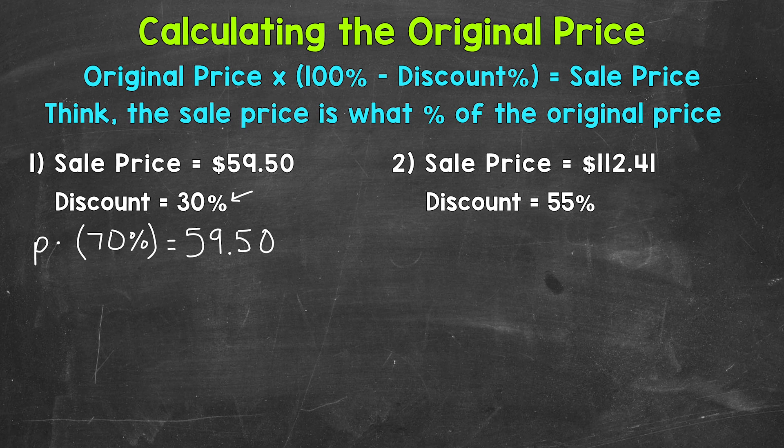Now let's talk about what that 100% minus the discount percent means. This will give us what percent of the original price we are paying. 100% represents the full original price, and we subtract the discount percent to see what percent of the original price we are paying. So for number 1, again we did 100% minus 30%, and that gives us 70%. We are paying 70% of the original price.